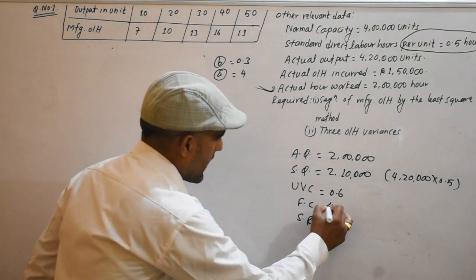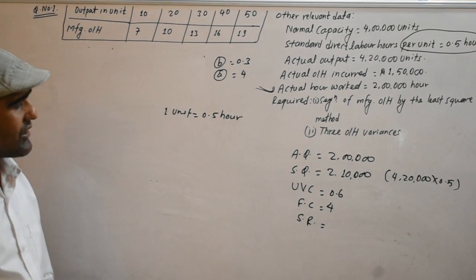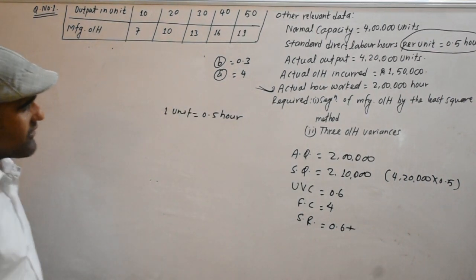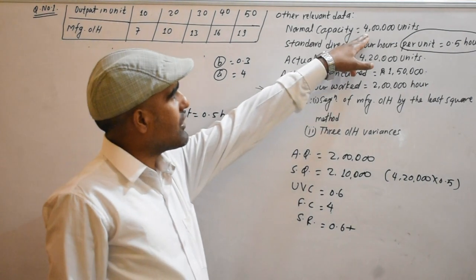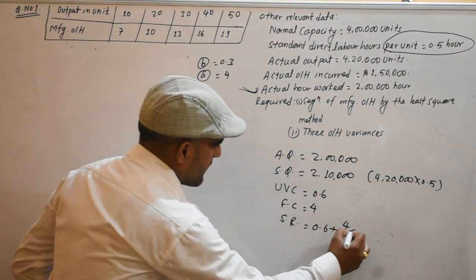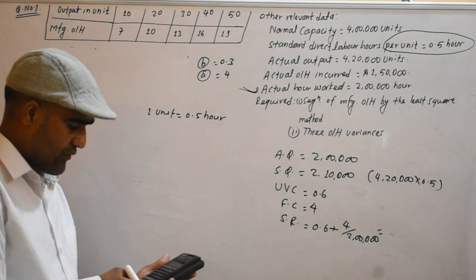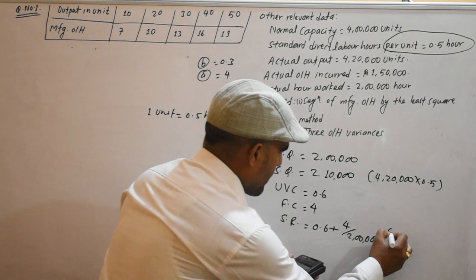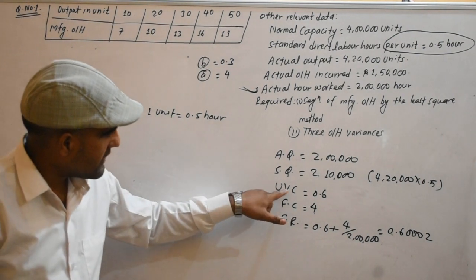If you have a standard rate, you will have 0.3 variable. The rate comes to 0.6 total overhead rate per standard hour. So the overhead rates are: variable 0.3 and fixed giving a combined rate of 0.6 per hour. The total overhead equals 2 lakhs.